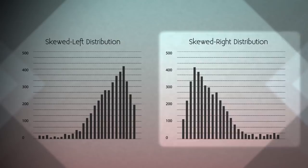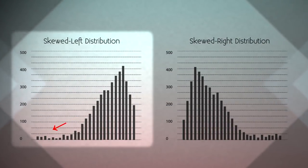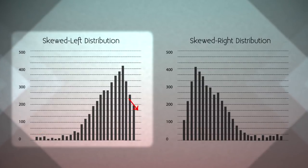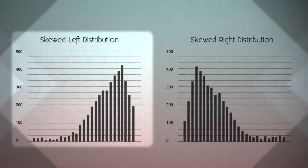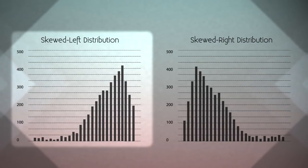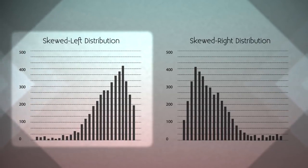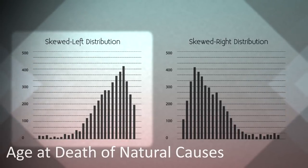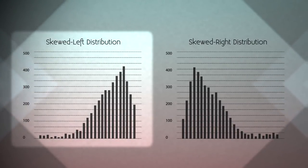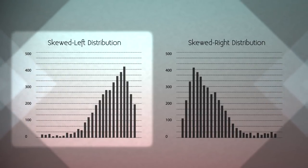A distribution is called skewed left if the left tail — the smaller values — is much longer than the right tail. In a skewed left distribution, the bulk of the observations are medium to large, with a few observations that are much smaller. An example is age of death from natural causes: most deaths happen at older ages, with fewer cases at younger ages.